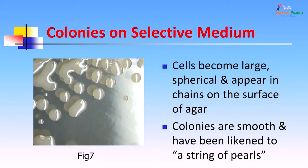Surprisingly, the same organism when grown on a medium containing penicillin gives a drastically different appearance. The cells become large and spherical and appear in chains on the surface of the agar. Colonies are smooth and have been likened to a string of pearls. You can see the difference in the colonies in the penicillin-containing medium versus the medium without penicillin, which showed the Medusa head colonies.